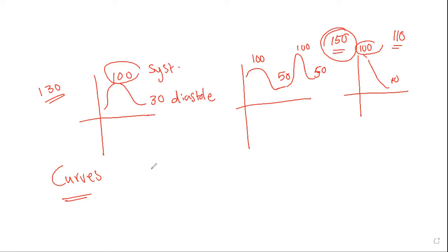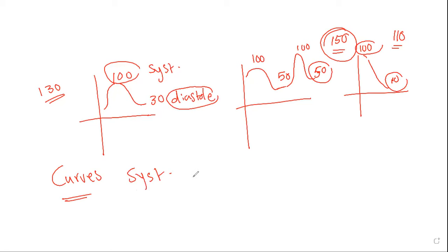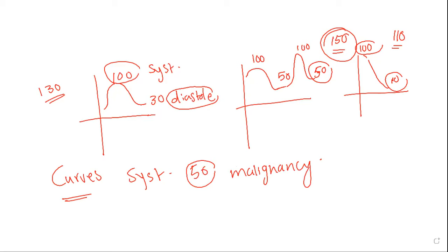These Doppler curves can suggest a lesion is more malignant because it has more blood supply. Roughly, when the diastole is more than 50% of the systole, we are likely encountering a malignant lesion. The resistive index less than 0.4 to 0.5, or the PI less than 1, are the incriminating numbers that suggest a more malignant nature.